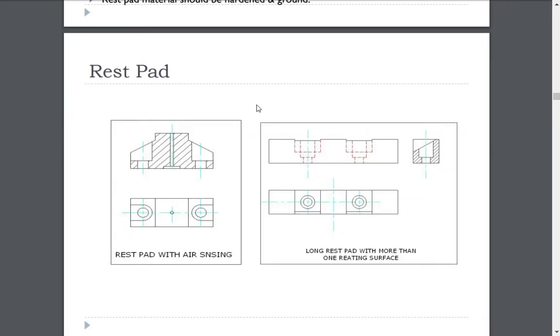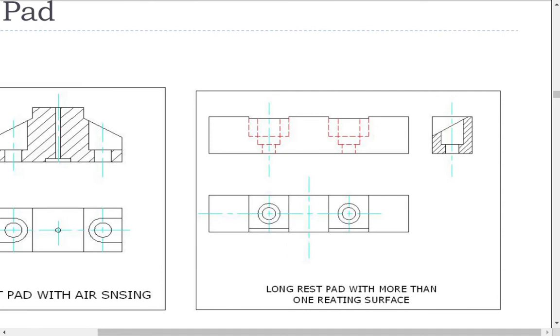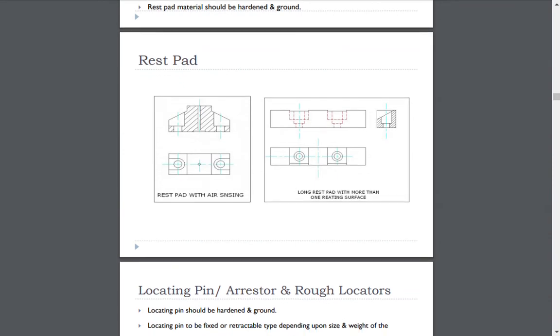These are rest pads. Left side rest pads are with air sensing. A minute hole is provided with leak testing gauge. When job is placed then air is allowed to pass through that hole. If pressure drops or leakage happens then the face of job is not properly resting. Right hand side figure is of long rest pad. Observe these concepts and implement in your design.